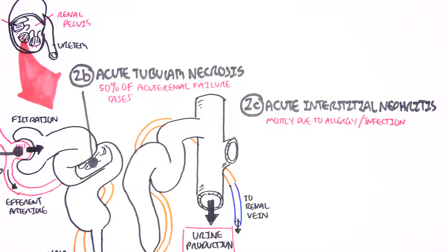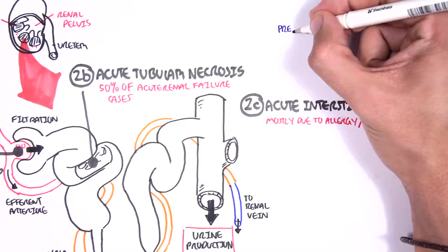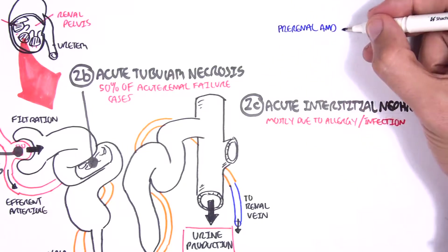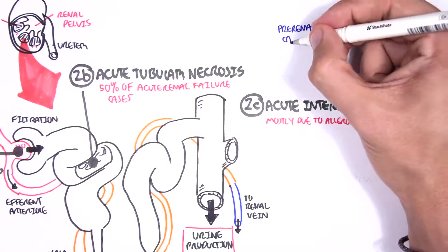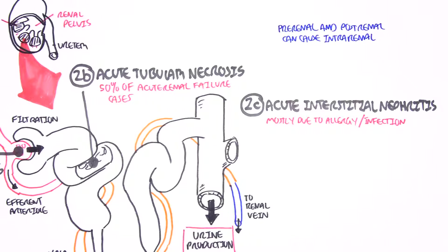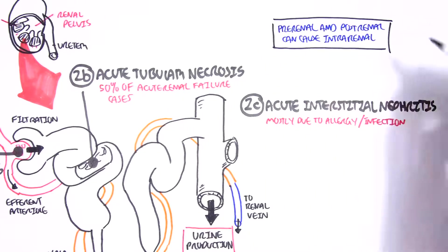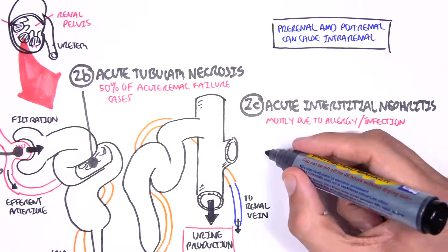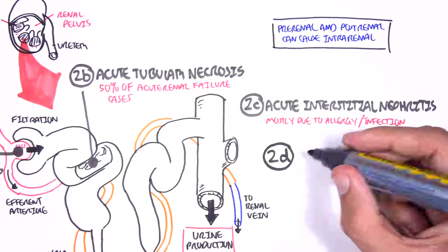For example, a pre-renal and post-renal can cause an intra-renal problem. This leads to the fourth main type of intra-renal cause of acute renal failure, which is vascular.